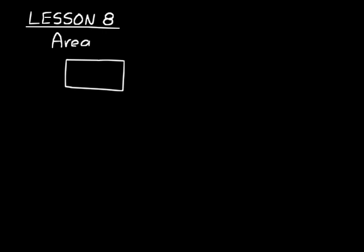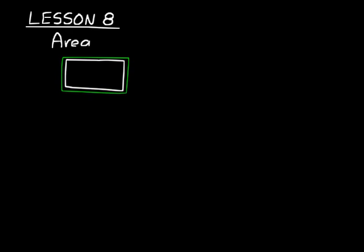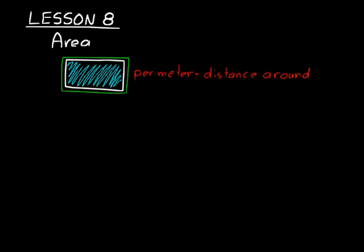To understand area, it's a good idea to review perimeter. For a rectangular shape on the board, perimeter is the distance around that object — you travel around it, add up the lengths of all the sides, and that gives you the perimeter. Area, on the other hand, is the surface enclosed by that flat shape, shown here shaded in blue.